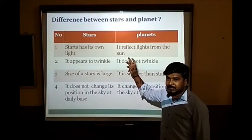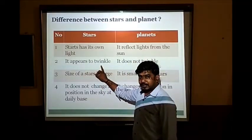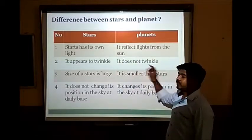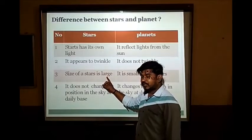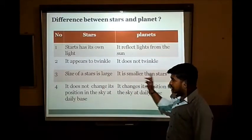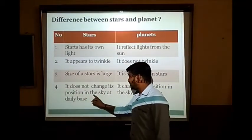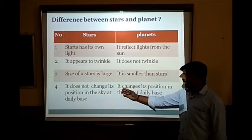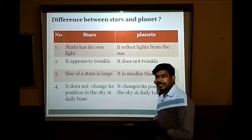The size of a star is large, while a planet is smaller than stars. Stars do not change their position in the sky from day to day, while planets change their position in the sky from day to day.